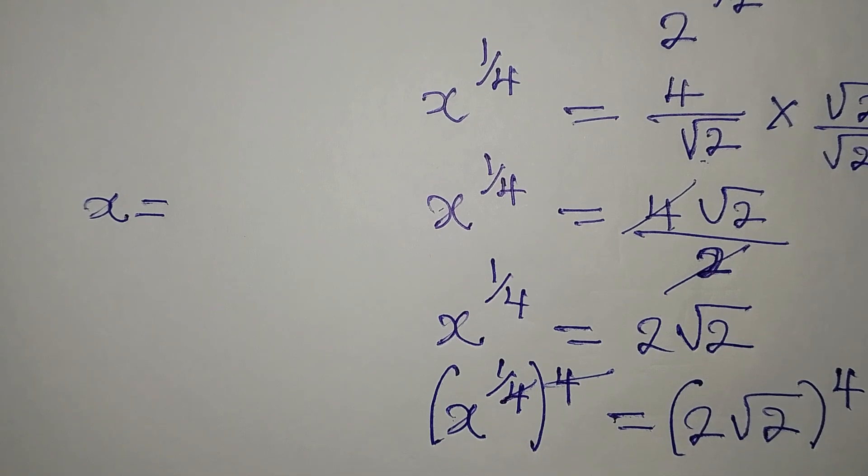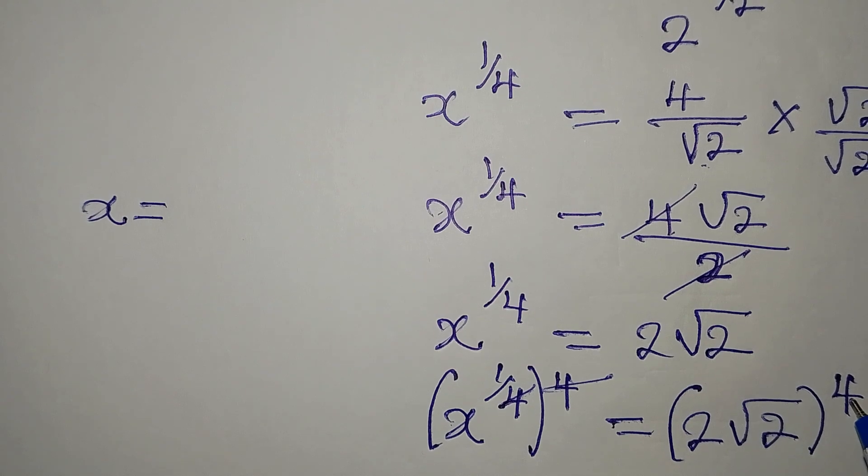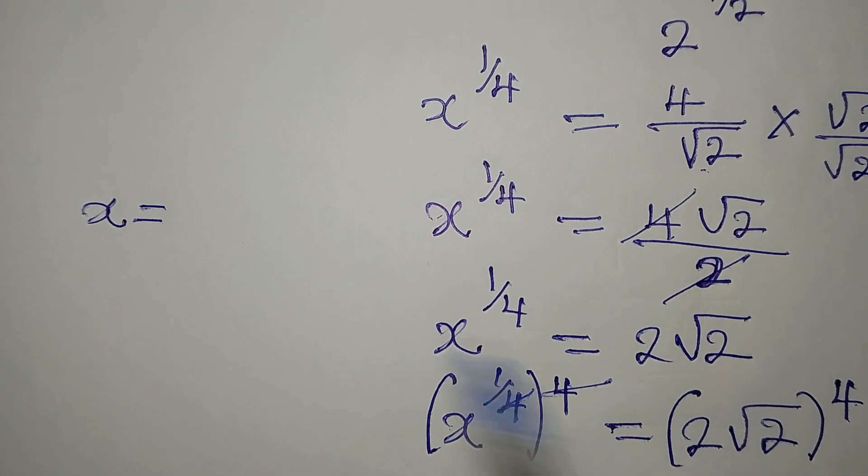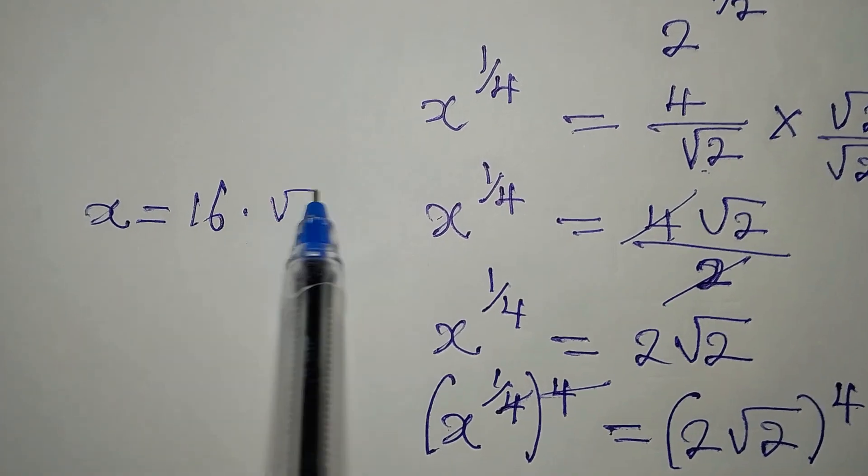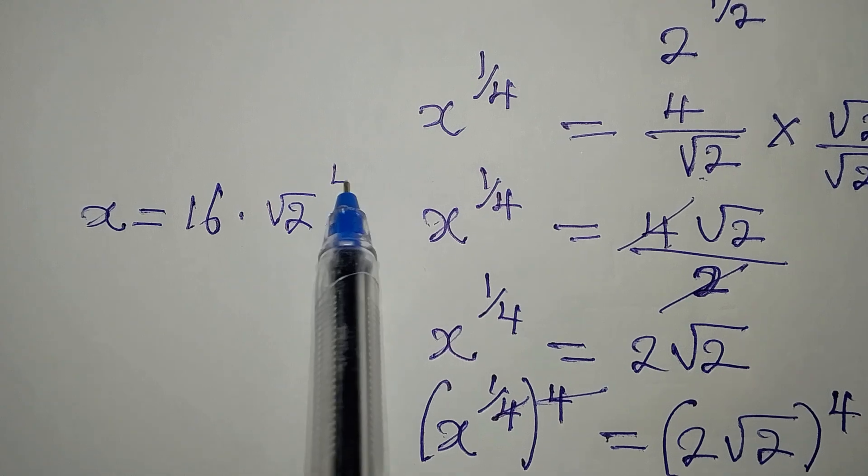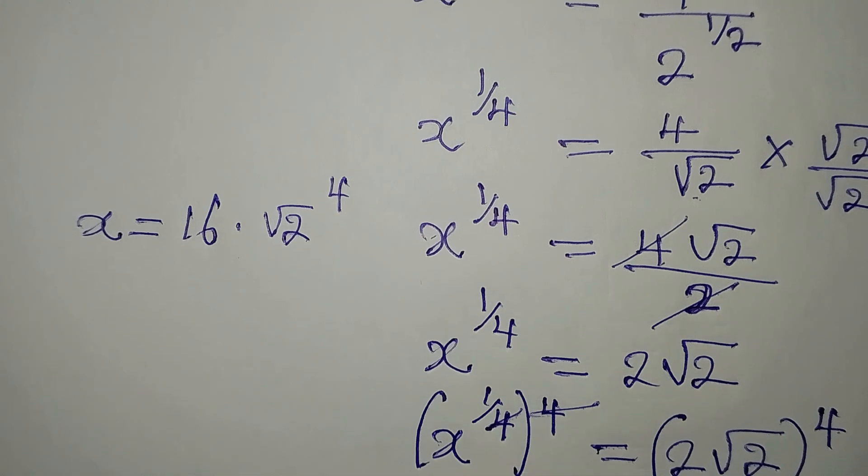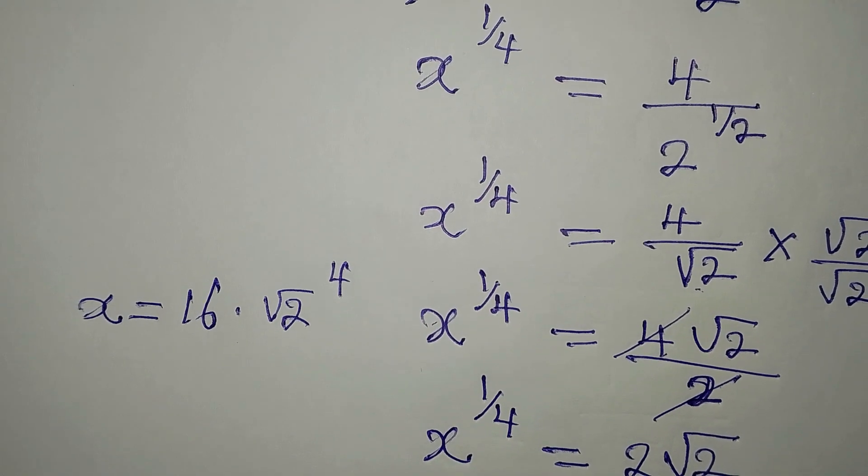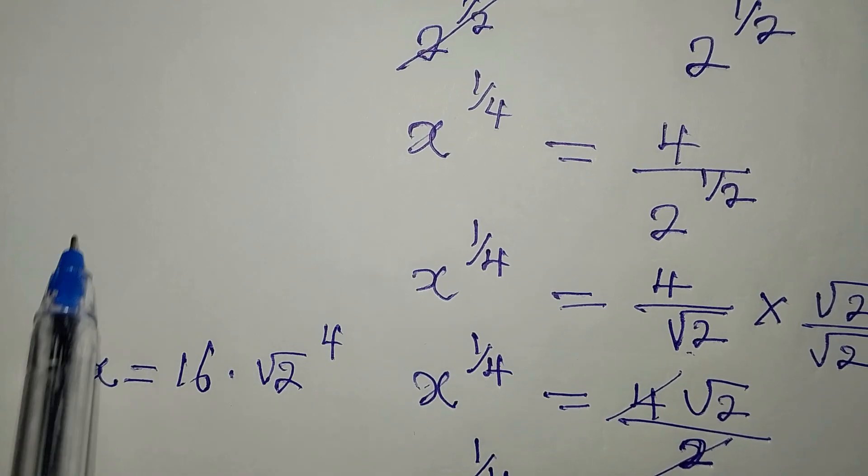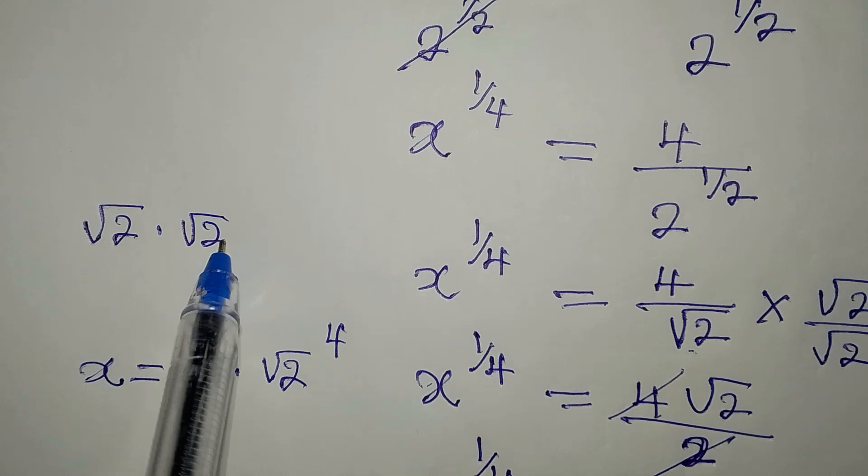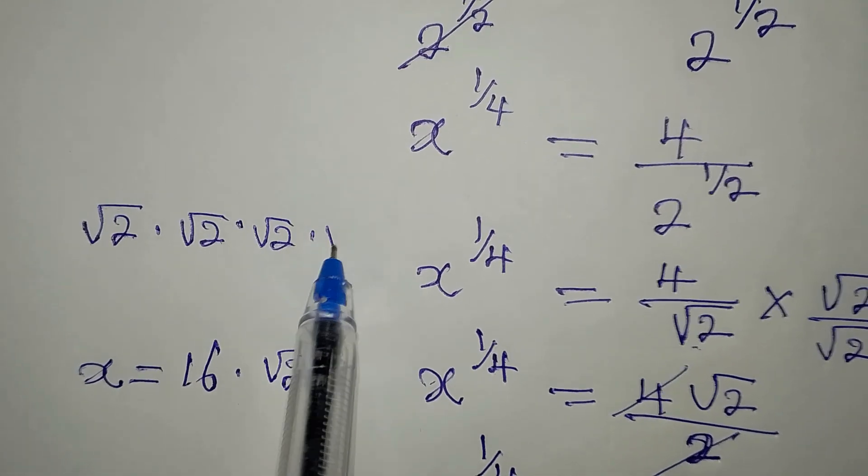Then on the right, we have 2 to the power of 4, right? That's going to be 16. That will be 16. Then multiply by root 2 to the power of 4. Let's work on that. Root 2 to the power of 4 here is root 2 times root 2, times root 2 times root 2.